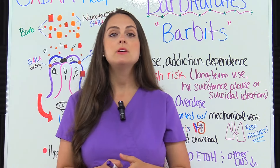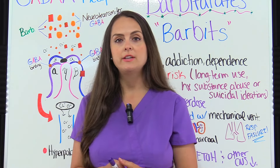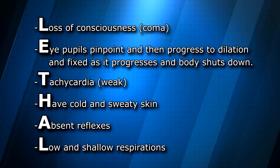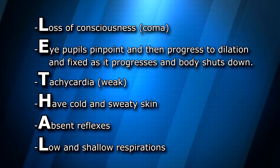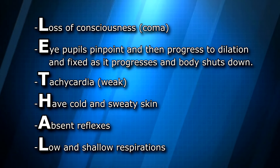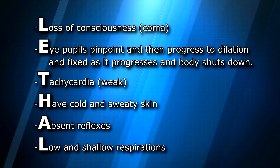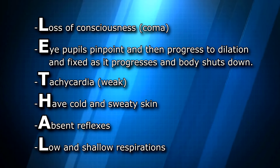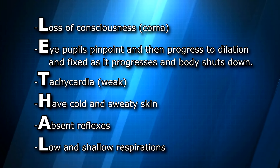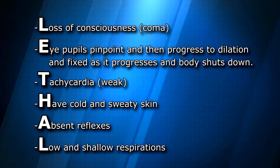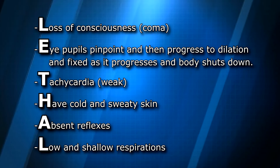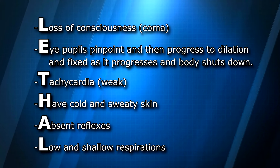To remember overdose signs, use the mnemonic LETHAL: L — loss of consciousness to the point of coma; E — eye pupils pinpoint, progressing to fixed dilation; T — tachycardia with a weak pulse; H — have cold and sweaty skin; A — absent reflexes; L — low and shallow respirations.